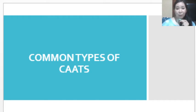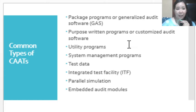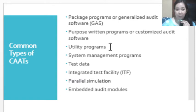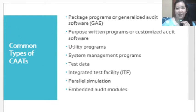This next video lecture is the continuation of our previous video lecture on Common Types of Computer Assisted Auditing Techniques. We have the following types of CAATs: Package Programs or Generalized Audit Software (GAS), Purpose Written Programs or Customized Audit Software, Utility Programs, System Management Programs, Test Data, Integrated Test Facility (ITF), Parallel Simulation, and Embedded Audit Modules. We will discuss each of these as we go along.